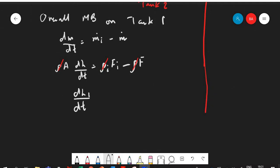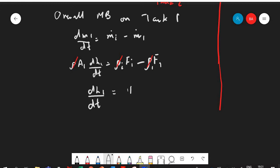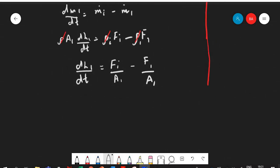Now I say dh1 by dt because we are talking about the first tank is equal to, and this is F1. So this is area 1. So this dh1 by dt is equal to Fi over A1 minus F1 over A1. And I know that F1 is here α1 into square root of h1, so I'm going to write this again: Fi over A1 minus α into square root of h1 over A1.